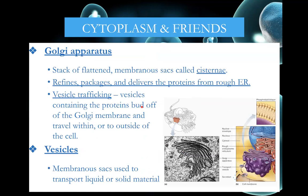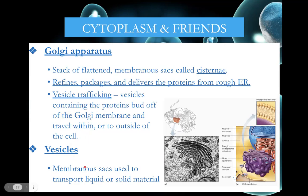The Golgi apparatus is closely associated with the rough ER because it accepts proteins and then refines and packages them into vesicles. Vesicles help store and transport things that would have trouble passing through the membrane — they transport proteins from the rough ER, packaged up in the Golgi membrane, and take them to the plasma membrane to push out of the cell. Vesicles help transport proteins and other things from one place in the cell to another, or even to the outside of the cell.